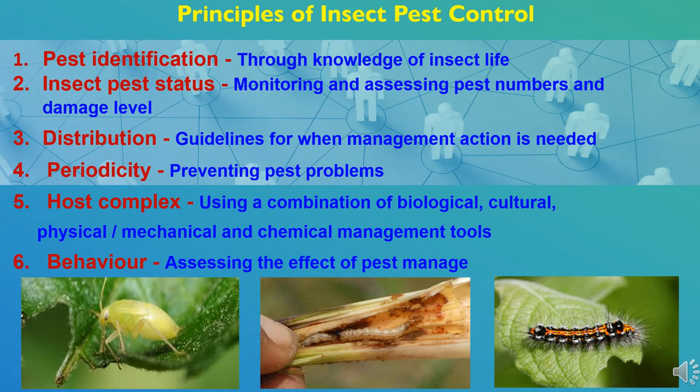A few things are very essential for effective control of any particular insect. First is pest identification and thorough knowledge of insect life cycle. Second is insect pest status, which can be determined by monitoring and assessing pest numbers and damage level. Third is distribution of insects in particular geography, for which guidelines can be taken when management action is needed. Fourth is periodicity of insects, preventing pest problems effectively.